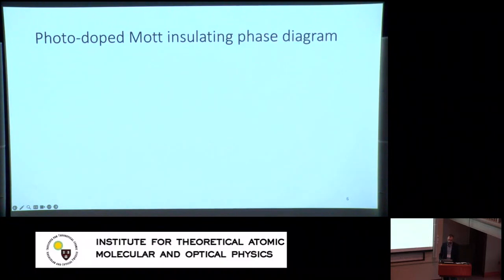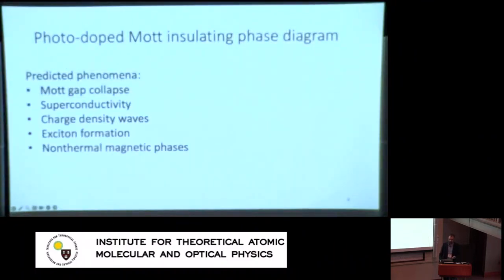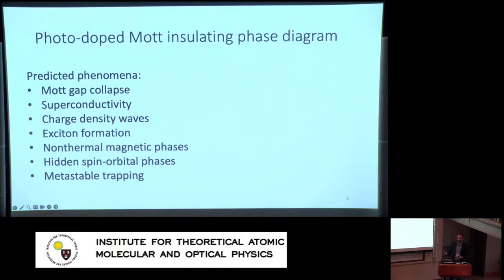Many phenomena have been predicted: the Mott gap collapse, superconductivity — including interesting types of superconductivity limited to the photodoped regime — charge density waves, exciton formation, non-thermal magnetic phases, hidden spin-orbital phases, and metastable trapping.